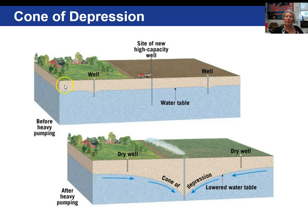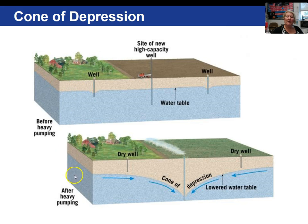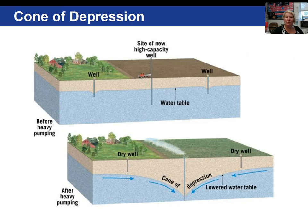Here we have two wells initially, with the water table shown. A new high-capacity well is constructed at this location. Because of the high volume of water extracted from the aquifer, the water table is lowered and a cone of depression forms around the well. Notice that the original wells are no longer usable — they are above the water table. Those people would have to drill new wells deeper into the earth, which is quite costly.